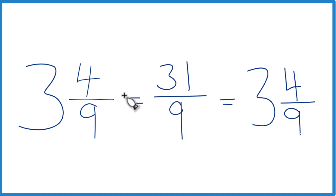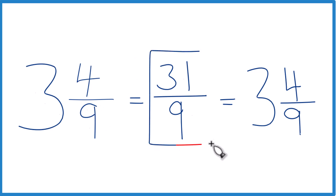This is Dr. B, writing 3 and 4 ninths as an improper fraction. The answer? 31 ninths. Thanks for watching.